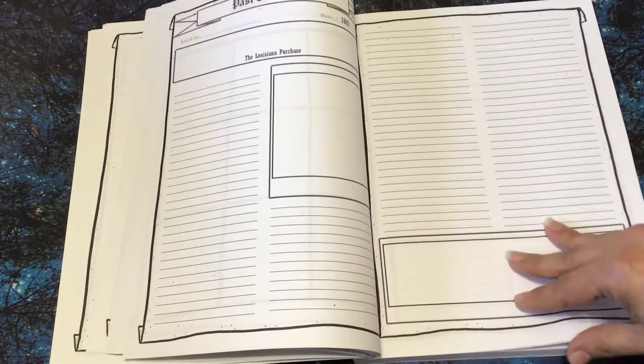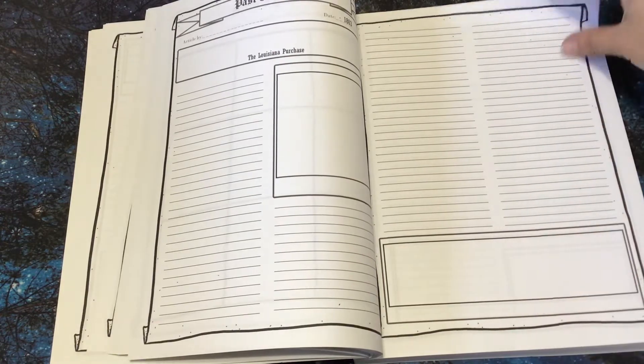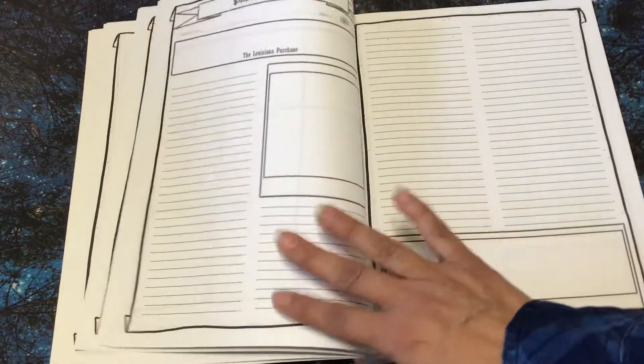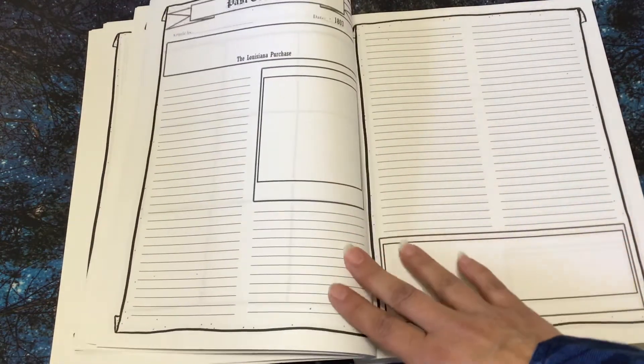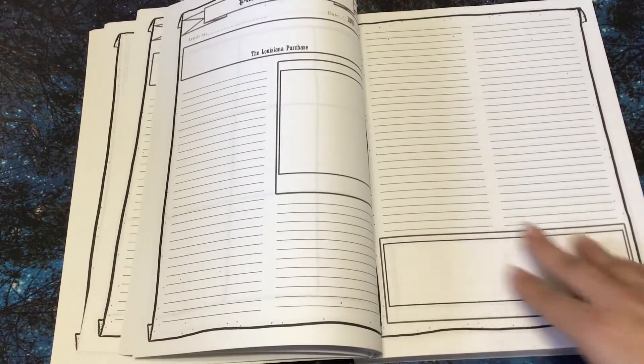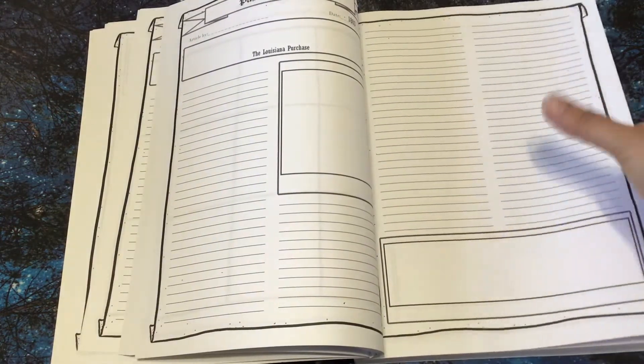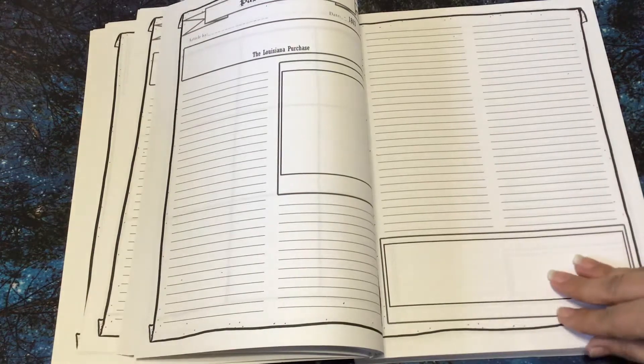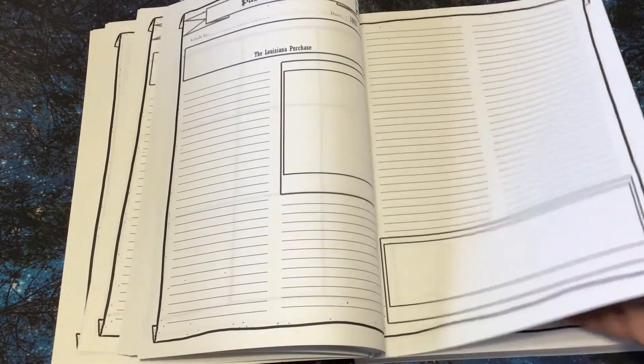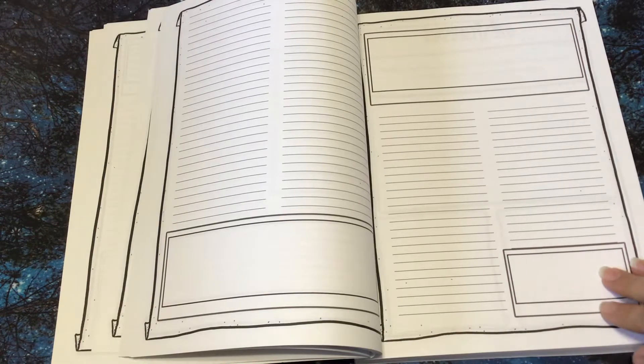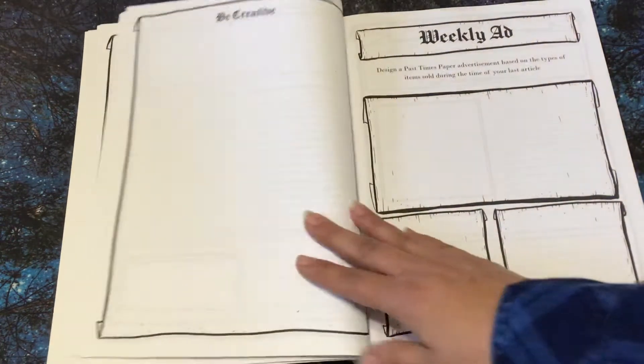This one's on the Louisiana Purchase. They could even do one, like let's say they're learning about the Louisiana Purchase. They could study that for a week. So these pages can last. They could be learning about that topic for more than one day throughout the week or weeks even.